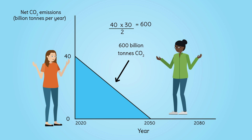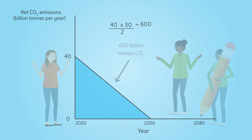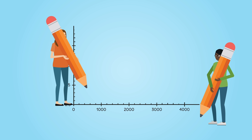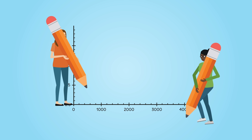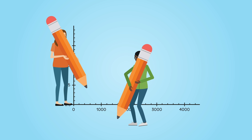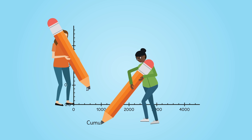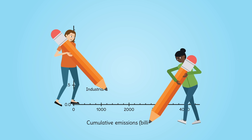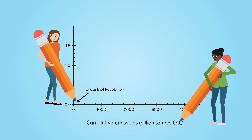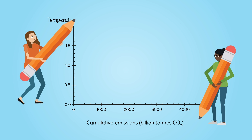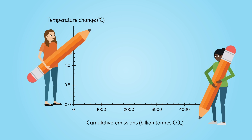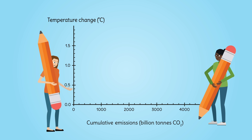But where have we pulled this 600 billion tons from? Let's look at a fundamental relationship in climate science. Along here are the cumulative CO2 emissions — the total CO2 emissions we've added to the atmosphere since the industrial revolution. Up here is global temperature change. The reason we refer to cumulative instead of yearly emissions is because when we add carbon to the atmosphere, it stays there.